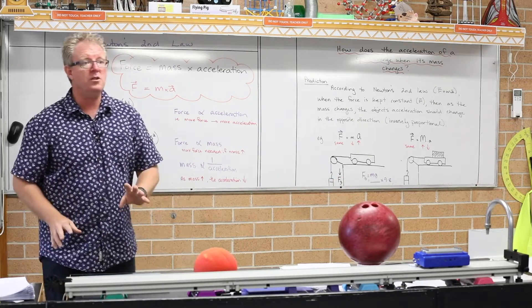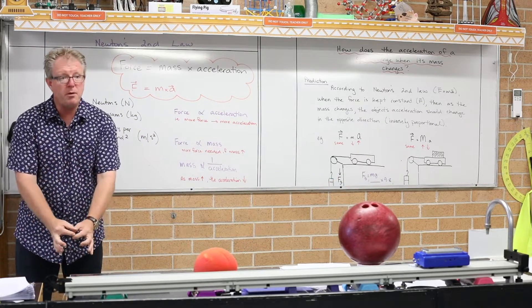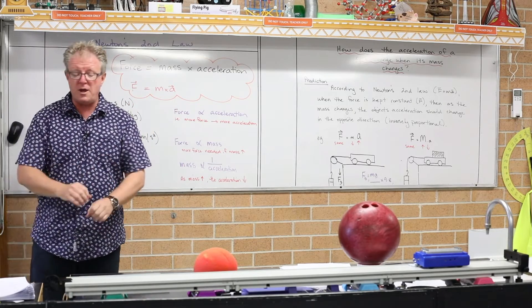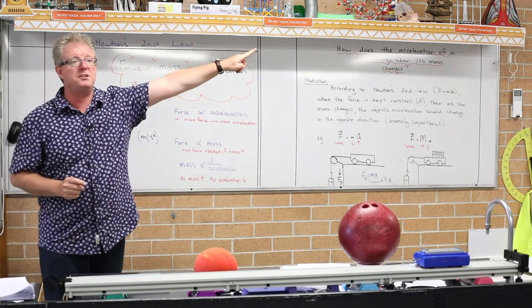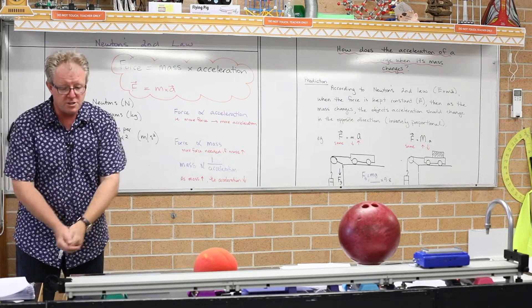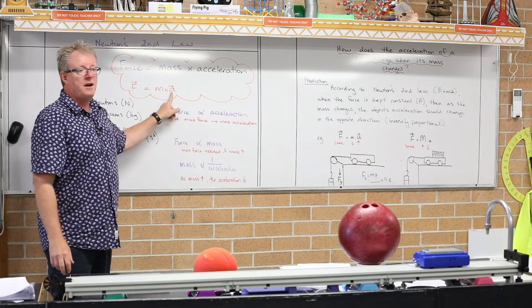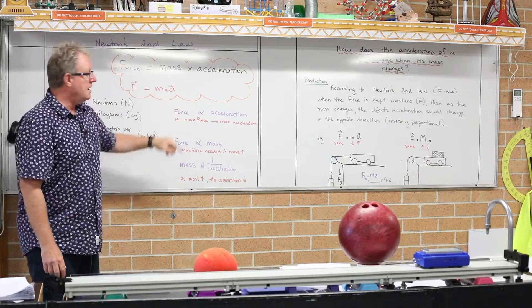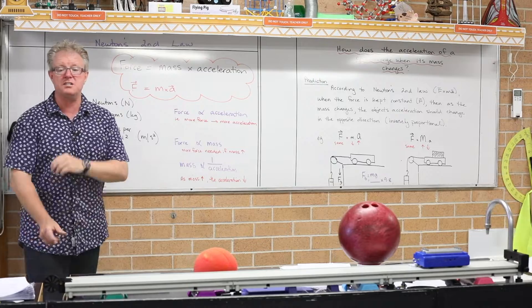And you guys know that, you've experienced that before in everyday life. You get a golf club and you've got a little ping pong ball there. If you do the same swing and apply the same force to that ping pong ball, it's very light, it's going to be accelerating off the tee really fast. However, if I put the bowling ball there on the tee and I try and use the same force to hit it, it will not accelerate very fast. Because as the mass goes up, the acceleration goes down. And that's called an inverse relationship.